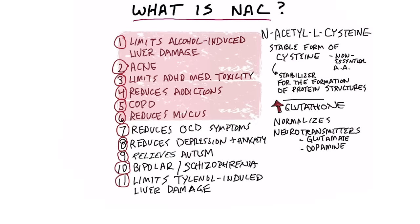Number seven, it can help reduce OCD — obsessive compulsive disorder — symptoms. Number eight, it can help reduce depression and anxiety because it affects the neurotransmitters. Number nine, it relieves autism symptoms, because it affects the neurotransmitters of the brain.